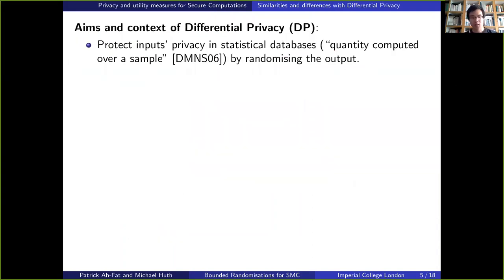So before presenting our approach, I'd like to make a brief digression in differential privacy because it is a topic that people often talk about or often think of when I introduce our problem and motivation. So differential privacy is closely related to our work in that it aims at protecting private inputs in statistical databases by randomizing the output of queries.